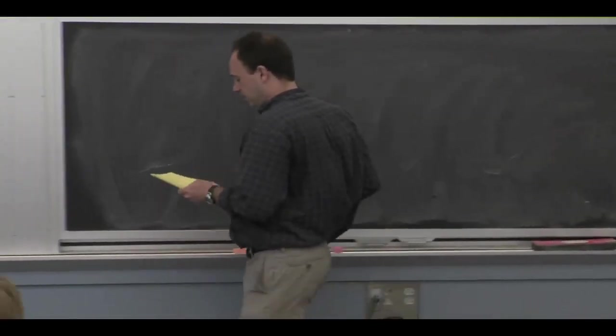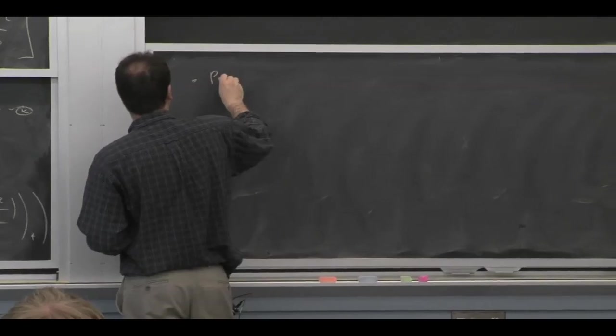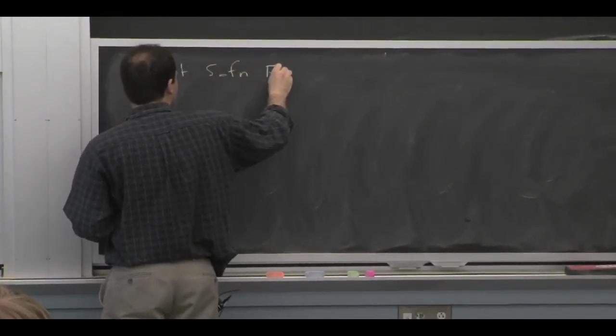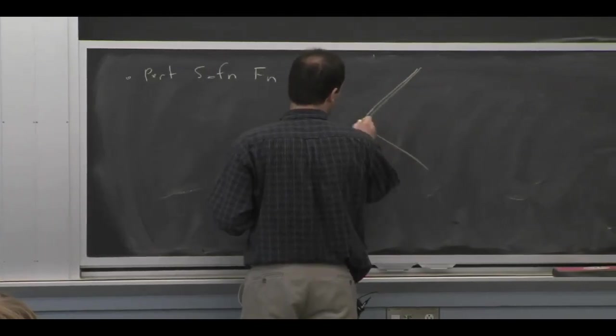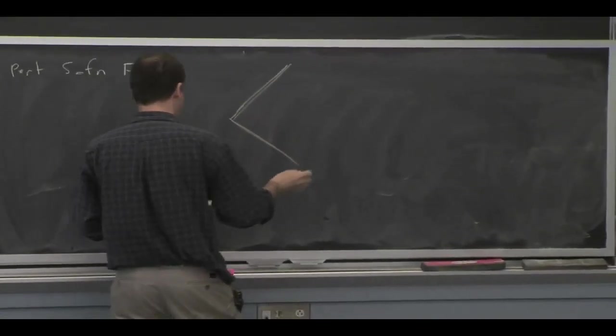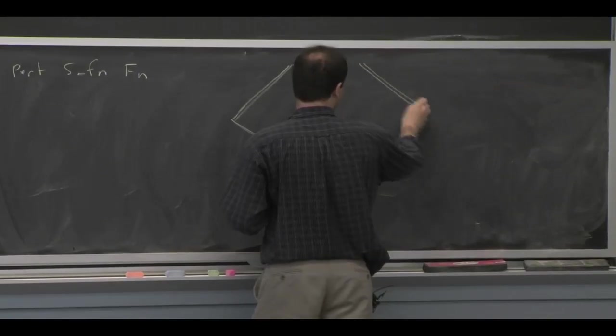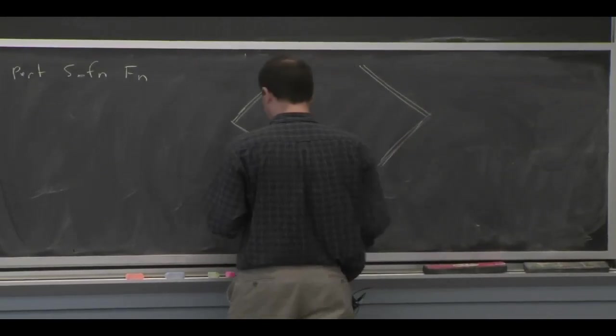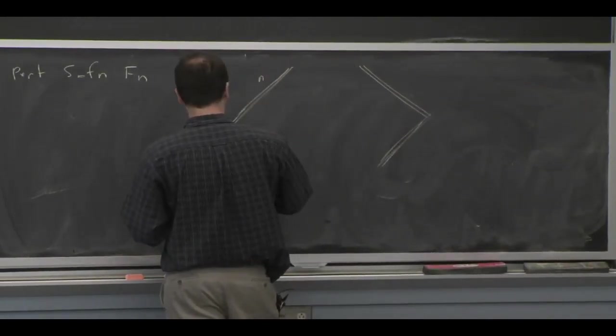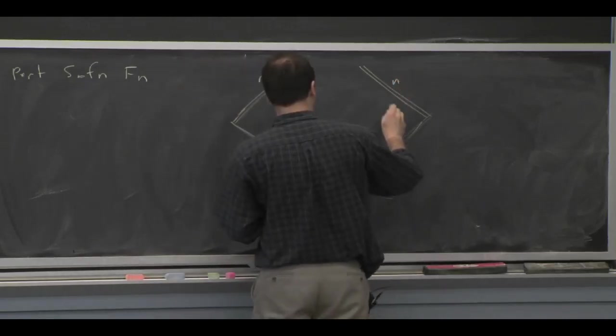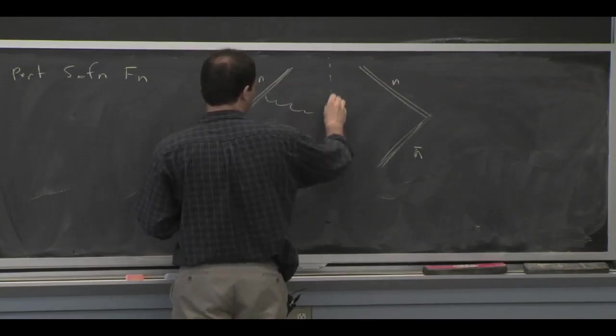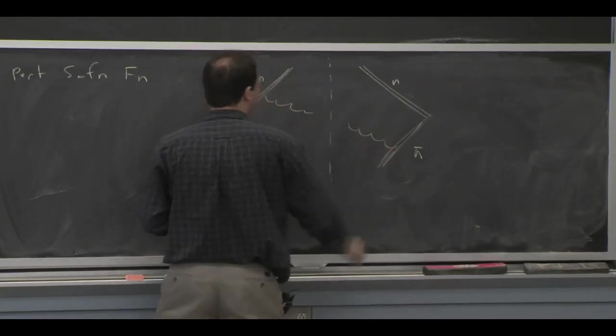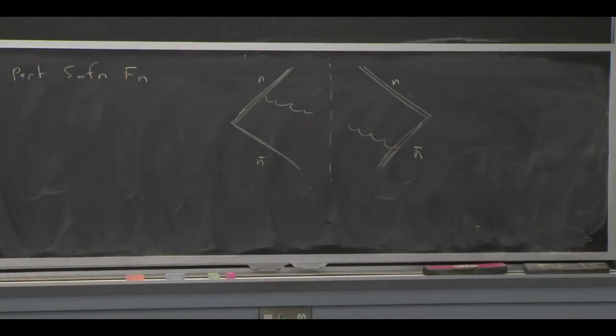And then there's the soft function, where, if it's perturbative, we can calculate it. And you can draw these kind of in some notation for the Wilson lines. So here's our Wilson lines in different directions. And then there's matrix element squared. And again, you can sort of think of these as kind of cut graphs like that, if you like.